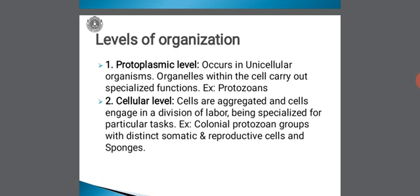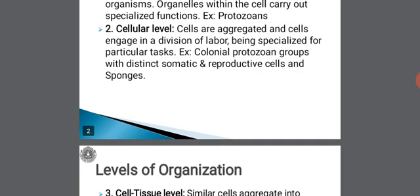The second type is cellular level. Here, cells are aggregated and engage in a division of labor, being specialized for particular tasks. Examples: colonial protozoan groups with distinct somatic and reproductive cells, and sponges, which show this cellular level of body organization.